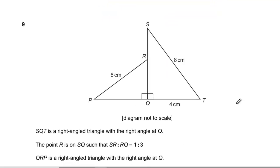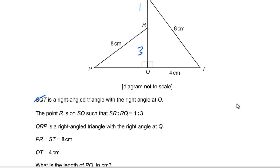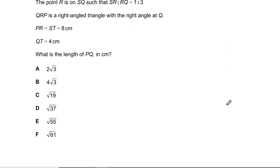Question 9: We've got a right angle triangle, point R is on SQ such that SR to RQ is 1 to 3, and QRP is a right angle triangle. They've given us all those lengths. What is PQ? SQ² is 64 minus 16, so SQ is root 48, which is 4√3. That means RQ is 3√3. Then PQ is the square root of 64 minus 27, which is √37. That's answer D.